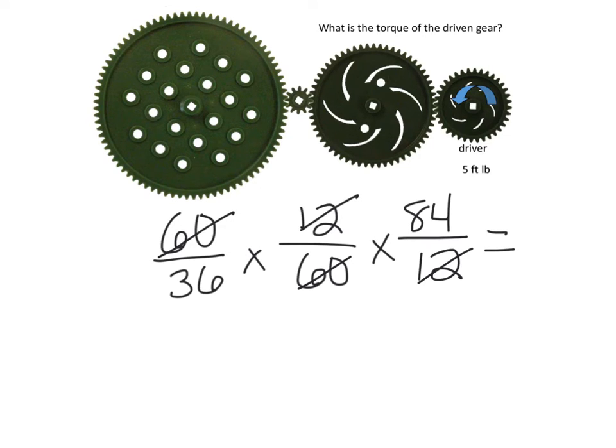So it makes the math a lot easier when you have a single gear train like this, just leaving those idle gears out, and make it to where it is out over in. So that's going to give us 7 over 3, which works out to be a 2.33 to 1 gear ratio.